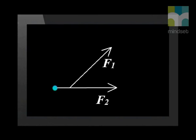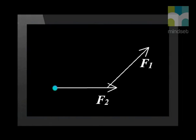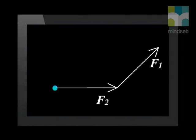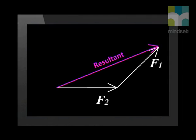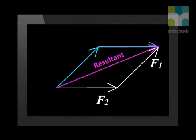We can move vector F1 sideways, parallel to itself. We are not changing the direction or the length of vector F1. The resultant force that is marked R is the force we get when both F1 and F2 act on the object.